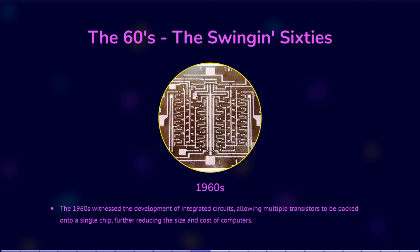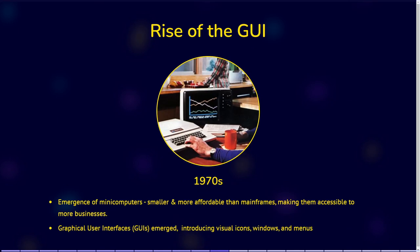The 1960s witnessed the development of integrated circuits, allowing multiple transistors to be packed onto a single chip, further reducing the size and cost of computers. The 1970s saw the emergence of minicomputers, which were smaller and more affordable than mainframes, making them accessible to more businesses. Graphical user interfaces, GUIs, emerged in the 1970s and revolutionized computing by introducing visual icons, windows, and menus.